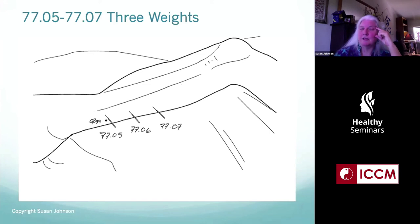It's on level with gallbladder 39, so that's four fingers above the tip of the external malleoli. And then our second and third weights are going to be found two sun or three fingers above and look for the hole again, and two sun or three fingers above again, look for the point.